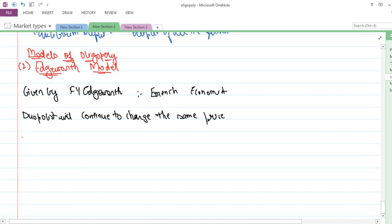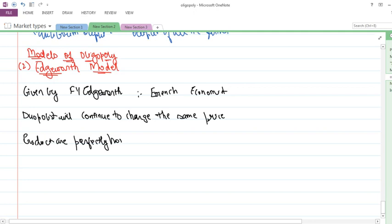He also assumed that the products of duopolists are perfectly homogeneous. The cost conditions of the two duopolists need not to be exactly the same but must be similar. Cost conditions need to be similar.